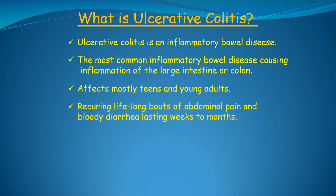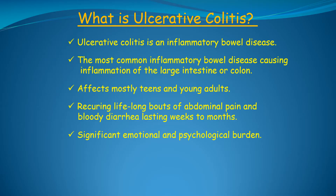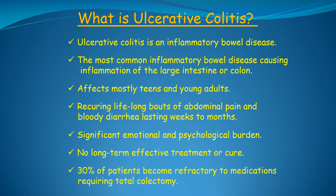Ulcerative colitis causes bouts of abdominal pain and bloody diarrhea, with multiple daily bowel movements that can be sudden, unexpected, and explosive. These unexpected bouts, which are called relapse of disease or flares, can last weeks to months and are accompanied by significant emotional and psychological trauma, both for the patients and their entire family. There is currently no effective long-lasting treatment or cure, and 30% of people with ulcerative colitis eventually become refractory to all medical therapy and must undergo a life-saving total colectomy or surgical removal of their large intestine.